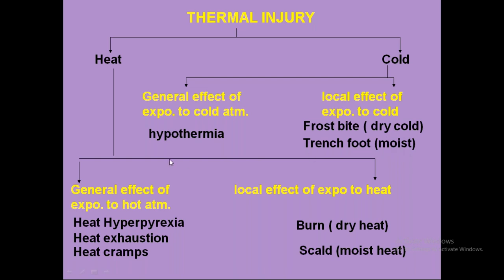Due to heat, injuries are also divided into two types: generalized effect and local effect. General effect of exposure to hot atmosphere will cause three conditions known as heat hyperpyrexia, heat exhaustion, and heat cramps. Whereas local effects of heat exposure will cause burns and scalds. Scalds are mostly caused due to moist heat, whereas burns are due to dry heat, mostly flames. Hot liquids causing burns are called scalds. This is the classification of thermal injuries.